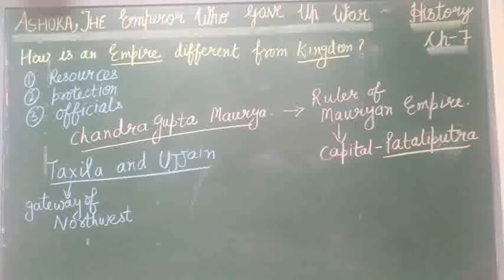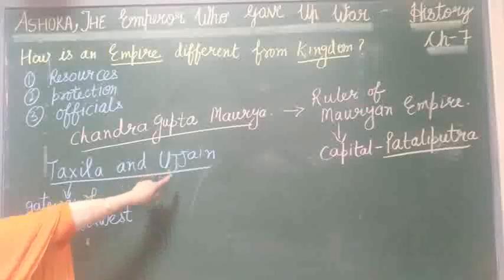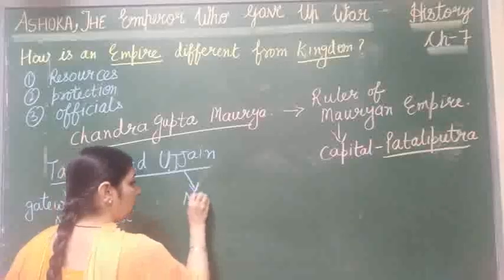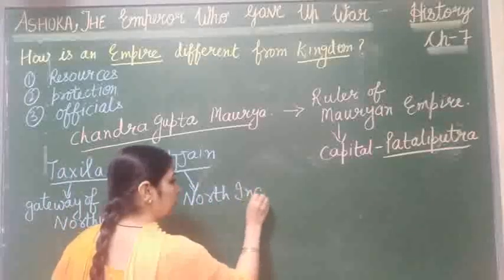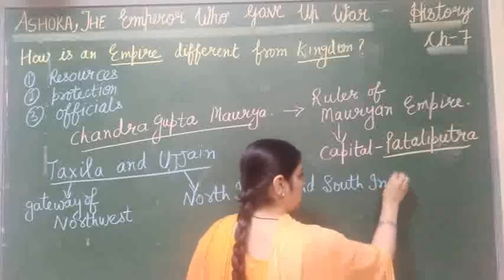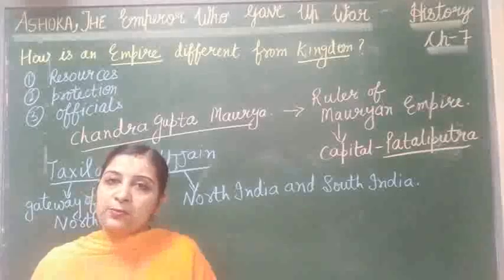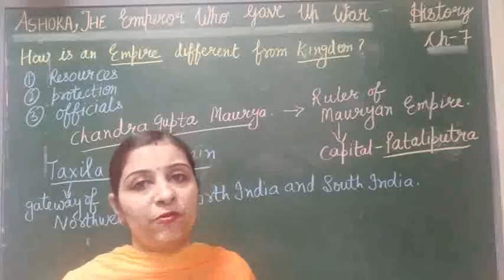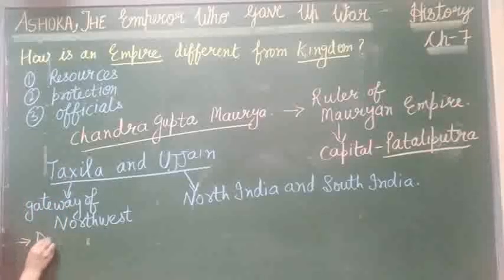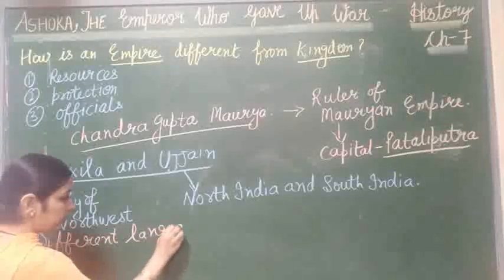While if the ruler wanted to control the Ujjain territory, he annexed the territories of North India and South India. As the Mauryan Empire was very large, different groups of people lived there and they spoke different languages.